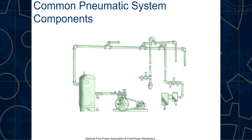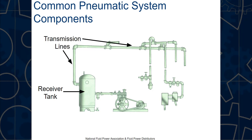Let's look at common pneumatic system components. The receiver tank stores compressed air. Transmission lines — plastic tubing or metal pipes — carry air to equipment. The compressor pulls in room air, compresses it, and pushes it into the receiver tank. The compressor is usually automatic, running until the tank reaches a set pressure, then turning off as air is used.